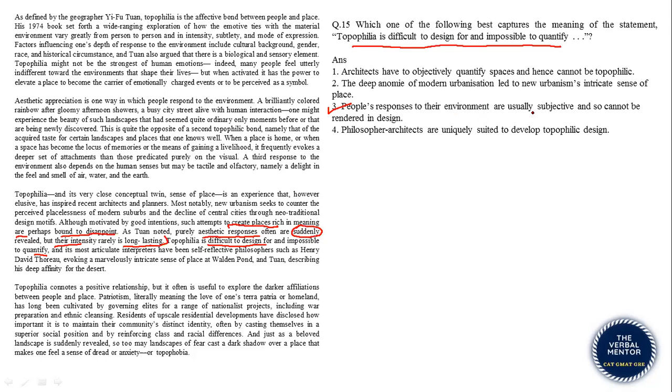People's responses to their environment are usually subjective in nature. The subjectivity also comes from the examples of Walden Pond and Tuan, who had an affinity with deserts. So these are subjective responses and cannot be rendered in design, therefore implied from this sentence.